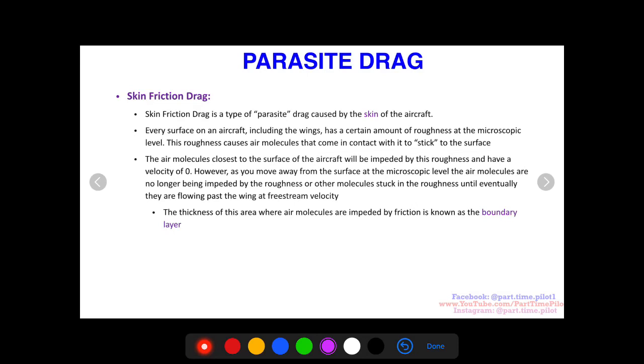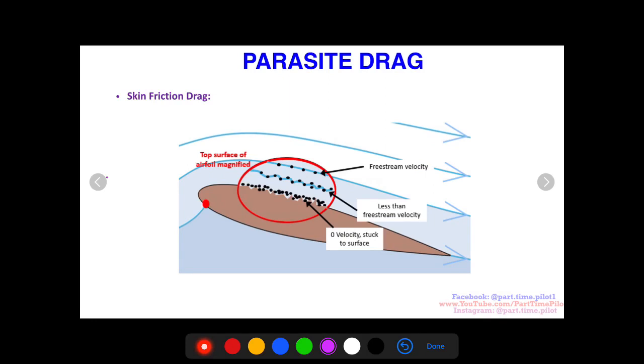As you move away, they're less affected by the roughness, and then eventually you're going to get far enough away where they're not impeded by the roughness at all. This thickness where they are affected is called the boundary layer. You may hear that in any aerodynamic talk that you might have. To visualize this, let's try and zoom in here. We have an airfoil, you have these blue lines of flow, and in this red area we're going to zoom in. Imagine this is zoomed in and you can see I made little imperfections at the microscopic level, and then all these black dots are the air molecules.